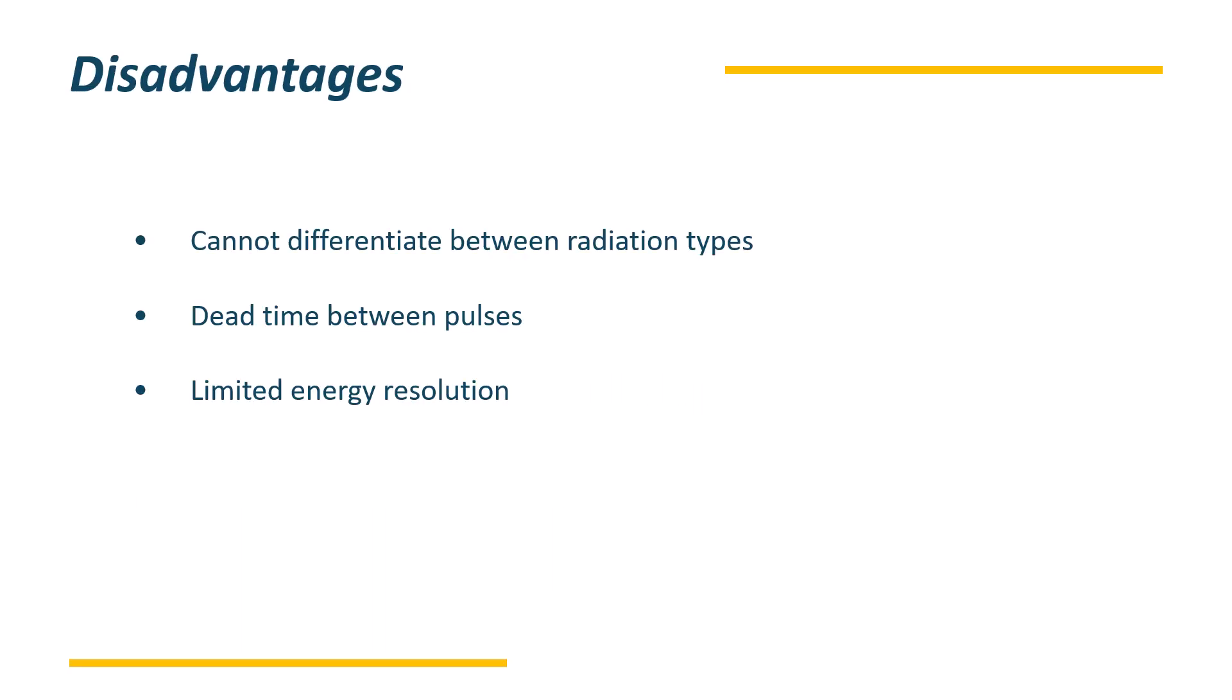At the same time, it is having certain kinds of disadvantages. There will not be much amount of discrimination in between the radiation types. Dead time will be seen in between the two pulses. And energy resolution is limited in case of GM counter.